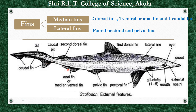The ventral or anal fin lies about five centimetres in front of the caudal fin. So the median fins include: first dorsal fin, second dorsal fin, one caudal fin, and one anal or ventral fin.